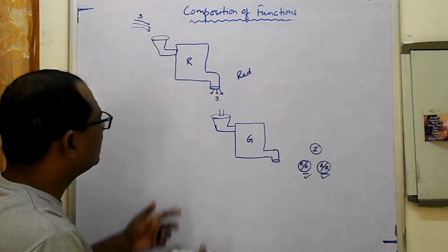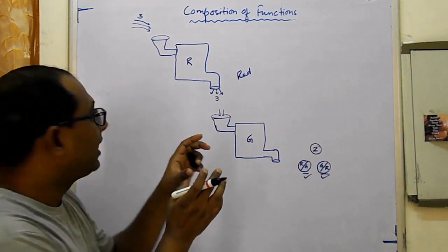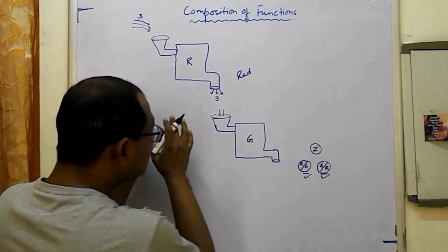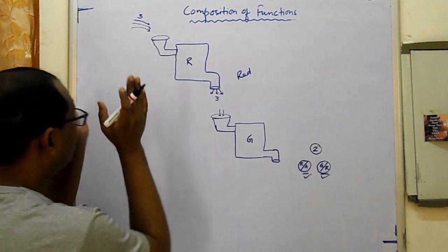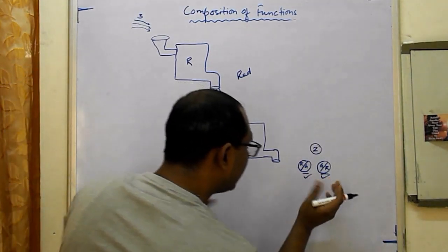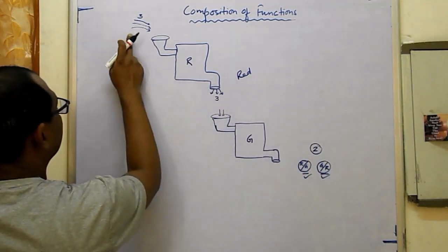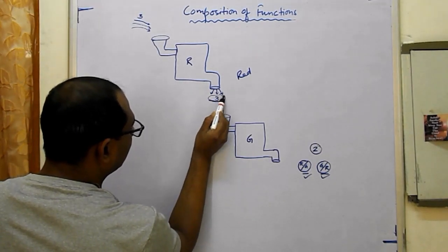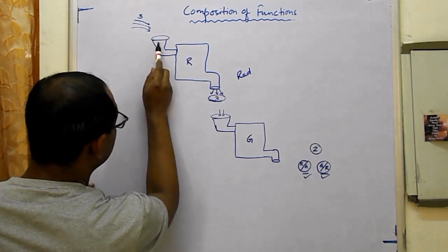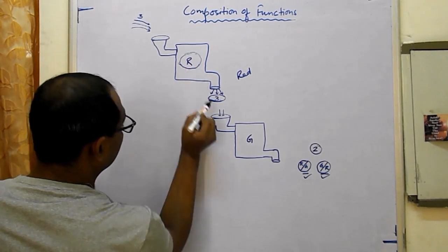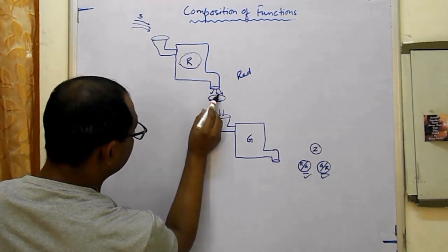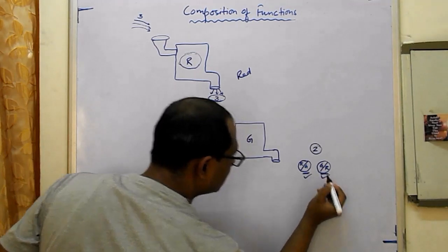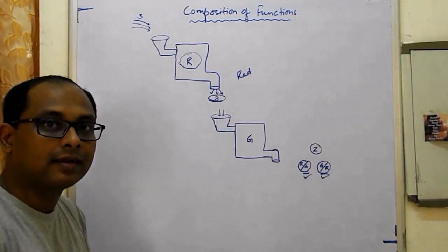This same example can be used for composition of functions. In order to get both colors, whatever output comes out of the first machine must go into the second machine. Whatever we put in must undergo the first machine, and all the output from the first machine must go into the second machine in order to get both colors.